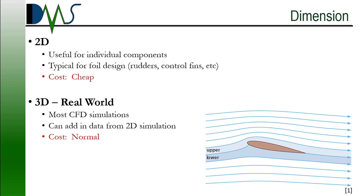The next question to consider is dimensions — 2D or 3D. Obviously, for real-world simulations we need 3D, and most CFD simulations are going to be three-dimensional. However, if you're trying to optimize a specific section shape like a wing section or a truss shape, you can go to a 2D section, which allows you to work very quickly and cheaply to do a lot of iterations. 2D is useful for detailed performance characteristics of a single component or cross section — trusses, wing sections, rudders, control fins. What's really useful is combining 2D simulations with 3D simulations.